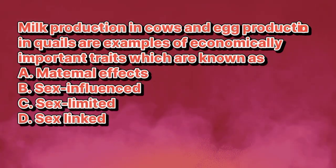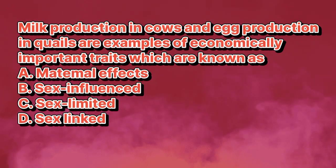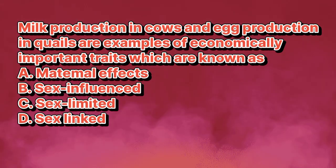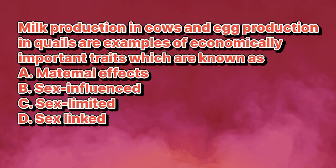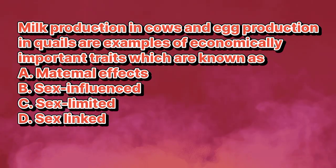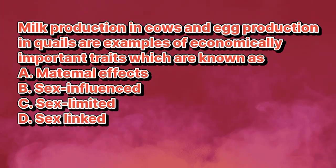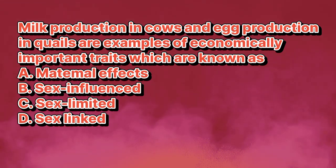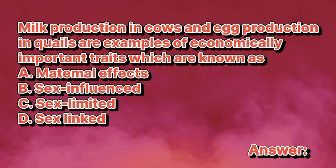Milk production in cows and egg production in quails are examples of economically important traits which are known as: A. Maternal effects. B. Sex influenced. C. Sex limited. D. Sex linked. The answer is letter C.